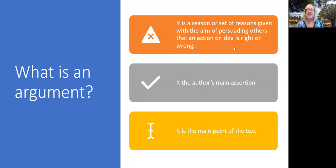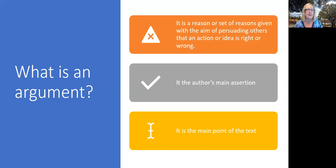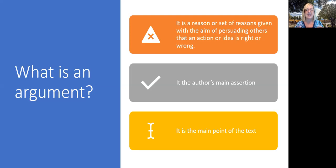Now, that leads to the question, what is argument? Well, an argument is not that back-and-forth thing that you do with somebody you're mad at — well, it is, but not in our context. In our context, an argument is a reason or a set of reasons given with the aim of persuading other people that an action or an idea is right or wrong. In a text, it's the author's main assertion. It is the main point of the text. All of these pretty much say the same thing: it's this idea that somebody wants to persuade somebody else.